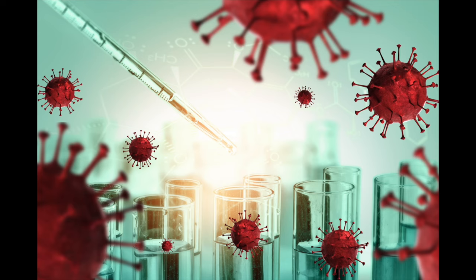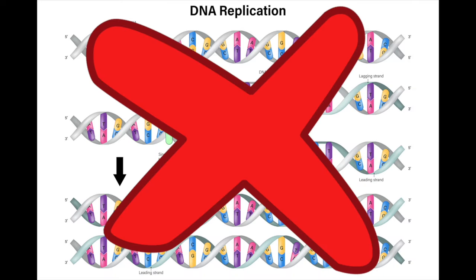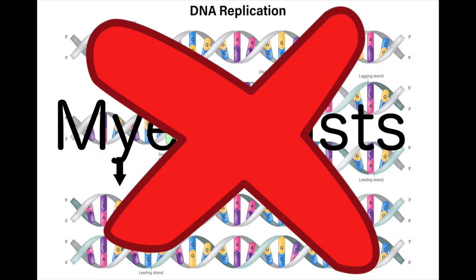Cytarabine is an effective drug that seizes the DNA replication of cells. So how does cytarabine stop the DNA replication of myeloblasts?